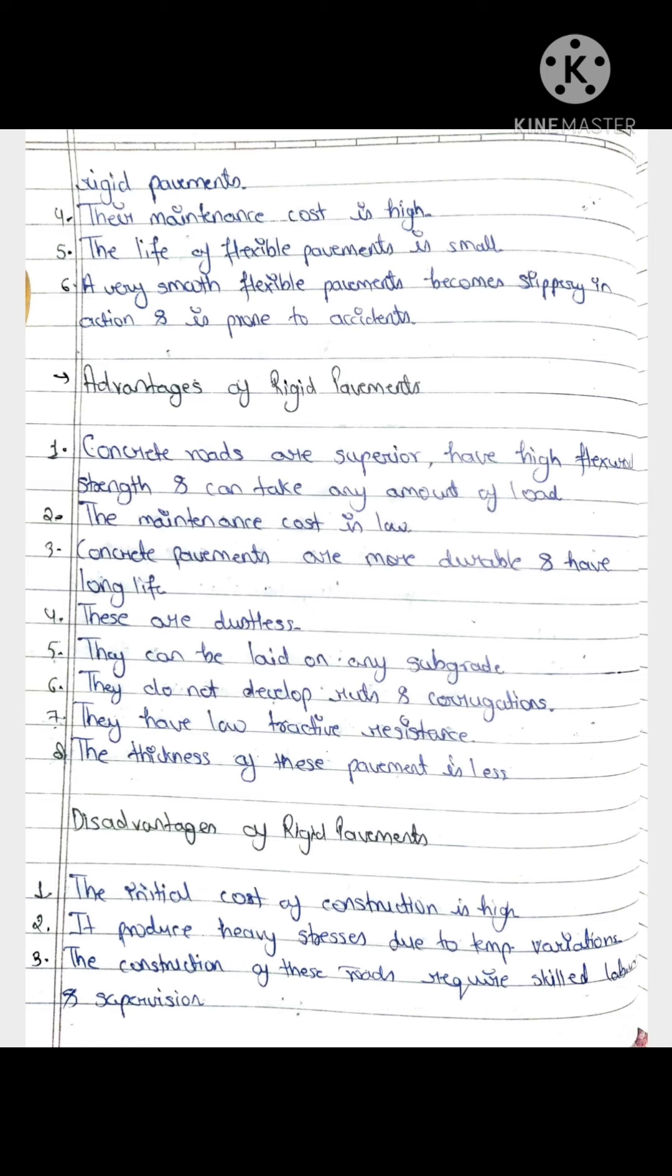The advantages of rigid pavement: First, concrete roads are superior because of high flexural strength and can bear good amount of load. Second, maintenance cost is low. Concrete pavement are more durable and have long life. They are dustless. They can be laid on any subgrade, so rigid pavement can be built on any subgrade.